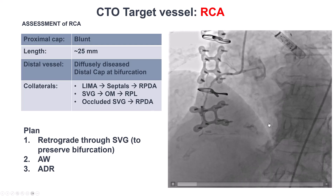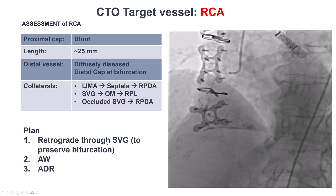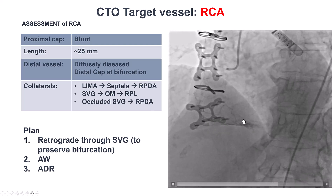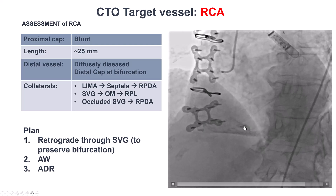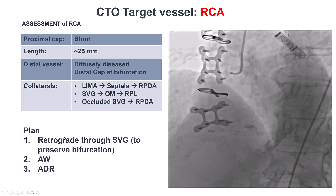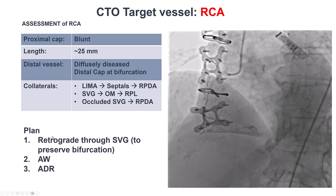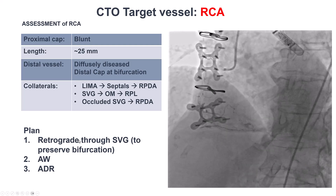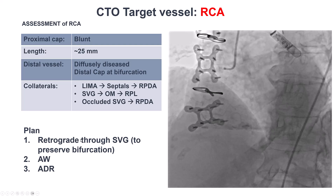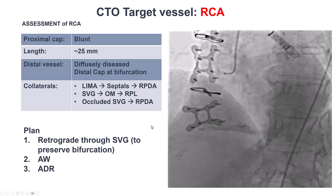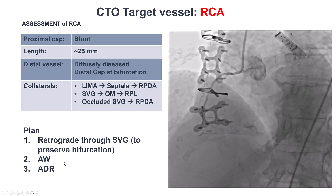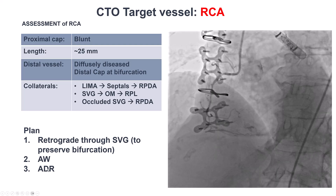Given the bifurcation of the PDA/PLV and the diffuse disease of the distal vessel, our plan was to go retrograde — a primary retrograde approach through the occluded saphenous vein graft. If that didn't work, we would try to go antegrade.